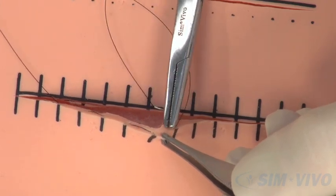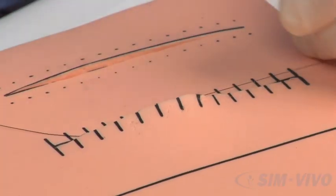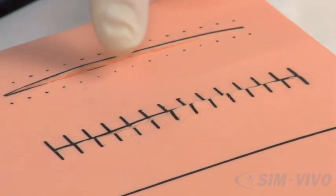Pull the suture taut. What you can see is that you have a couple of sutures exposed with three sutures underneath the skin. Now pull the sutures out and work on the bottom part of the incision.